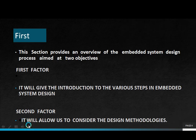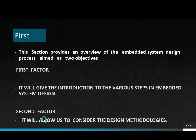This section provides an overview of the embedded system design process aimed at two objectives. First, it gives an introduction to the various steps in embedded system design - what all things need to be done and what the different steps are. Second, it allows us to consider the design methodology - what design methods we are using.